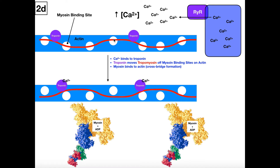These white circles on the actin are going to be myosin binding sites. In order to shorten the sarcomere and have muscle contraction, myosin will actually have to bind to these binding sites on actin. As of right now they're not bound, and the reason they're not bound at rest is because this red protein called tropomyosin is covering these binding sites. All of these binding sites on actin for myosin are covered up by tropomyosin.